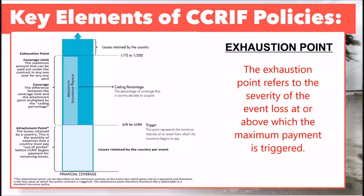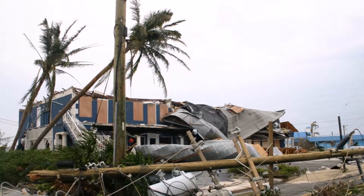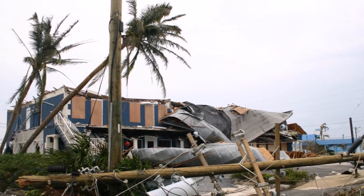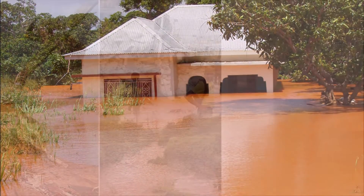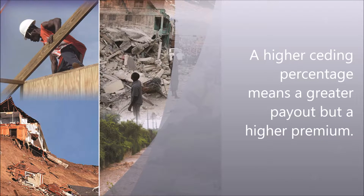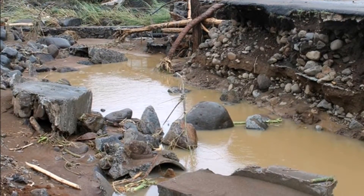The exhaustion point refers to the severity of the event loss at or above which the maximum payment is triggered. The seeding percentage is the portion of the losses that CRIF will cover under the policy — it is the fraction of the risk between the attachment and exhaustion points that the country is transferring to CRIF. Once the attachment point and exhaustion point are chosen, there is a one-to-one relationship between the amount of premium paid and the seeding percentage. A higher seeding percentage means a higher premium. The policy or coverage limit is the total amount that can be paid out under a policy.